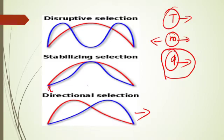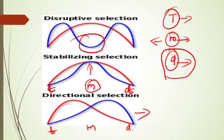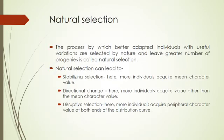In directional selection, one extreme end is selected. In stabilizing selection, the medium character — whether recessive or dominant — is the head of the character. In disruptive selection, both the tall and dwarf extremes are selected, meaning the medium individuals are not selected. Natural selection thus affects the frequency of alleles and genotype frequencies.